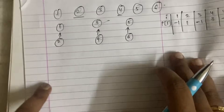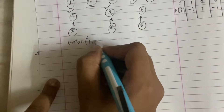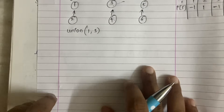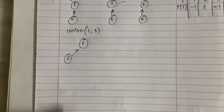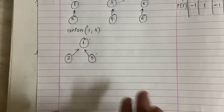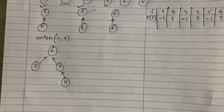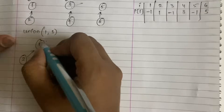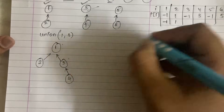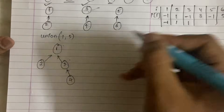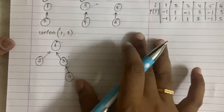In the second iteration, we combine the tree rooted at one with the tree rooted at three — that is, union(1, 3). We join node three under node one, and four remains under three. Updated p[i] values: p[1] = -1, p[2] = 1, p[3] = 1, p[4] = 3, and p[5], p[6] remain unchanged with p[5] = -1 and p[6] = 5.